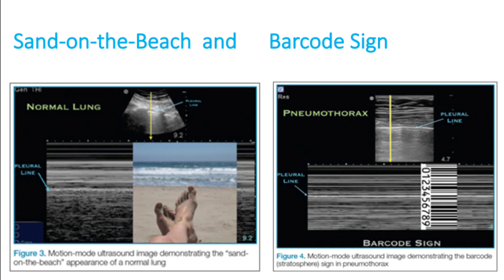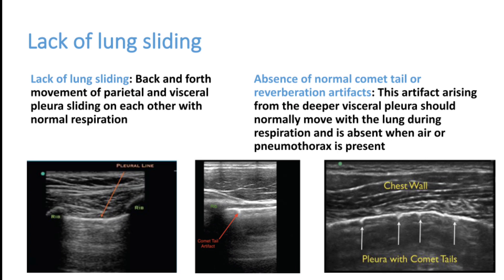Another important ultrasound sign is lung sliding — the back-and-forth movement of the parietal and visceral pleura sliding on each other with normal respiration — which is absent in pneumothorax. Additionally, the normal comet tail or reverberation artifact arising from the deeper visceral pleura, which normally moves with lung movement during inspiration and expiration, is also absent in pneumothorax.